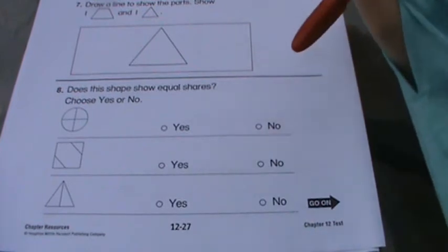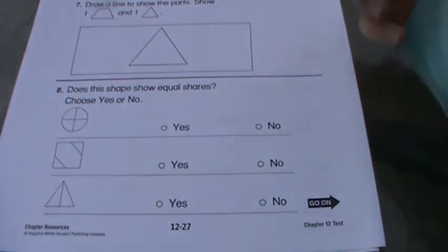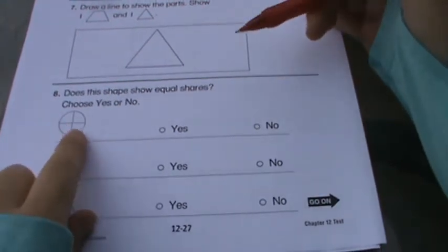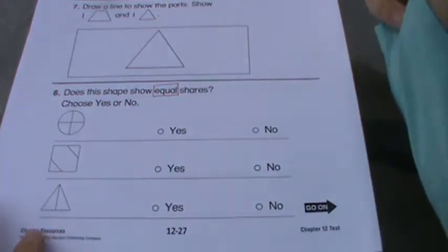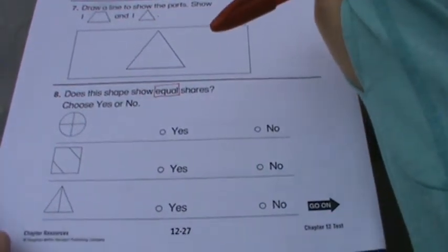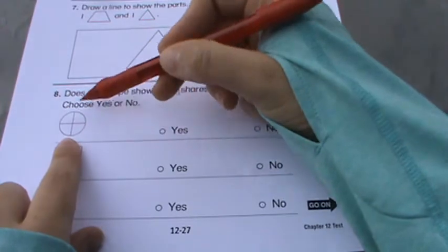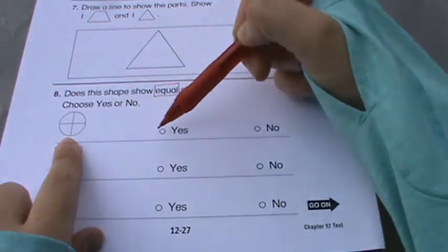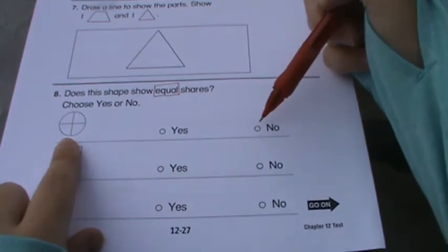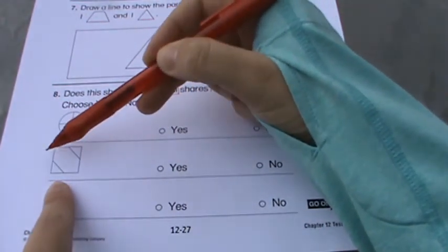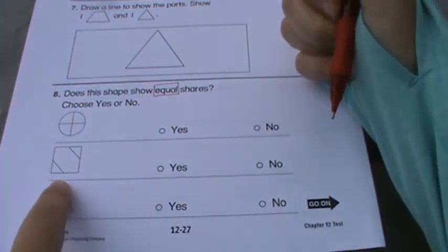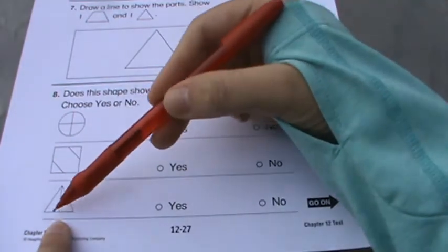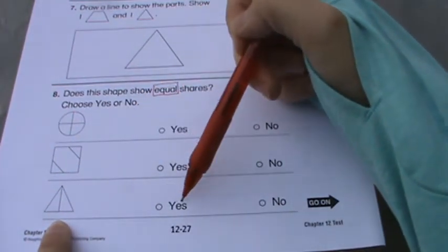Okay, number eight. Does this shape—so the shapes that they're showing you—does it show equal shares? It doesn't matter how many shares, just are they all equal shares, yes or no? So is this circle showing you equal shares, yes or no? Is this square showing you equal shares, yes or no? And is this triangle showing you equal shares, yes or no?